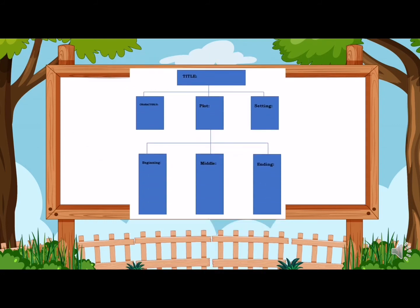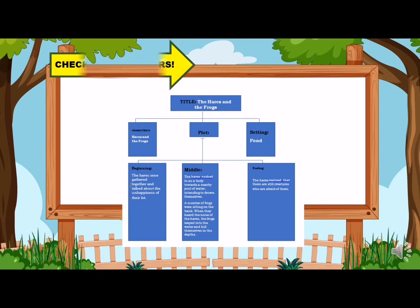Now it's your time to complete this story diagram. I will give you 5 minutes to do this. Please pause this video for 5 minutes. Now let us check your answers. The title of the story is The Hares and the Frogs. The characters are hares and frogs. The setting is in the pond. The beginning plot: The hares once gathered together and talked about the unhappiness of their lot. The middle plot: The hares rushed in as a body towards a nearby pool of water, intending to drown themselves; a number of frogs were sitting on the bank, and when they heard the noise of the hares, the frogs slipped into the water and hid themselves in the depths. The ending plot: The hares realized that there are still creatures who are afraid of them.